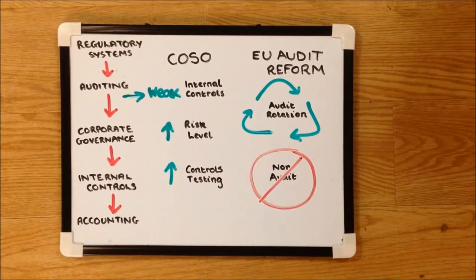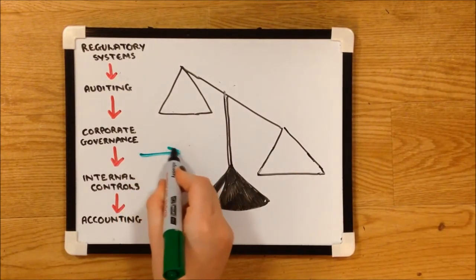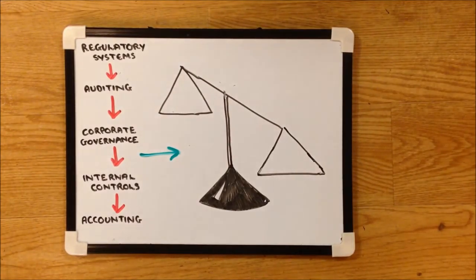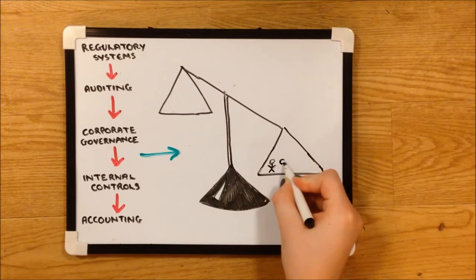However, auditors cannot be expected to uncover all fraud. This falls to the corporate governance system. The COSO model stresses that the board of directors should be independent and have sufficient power and inclination to overrule a dominant CEO.